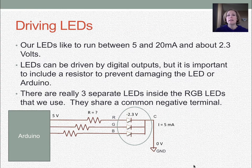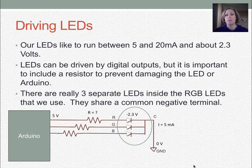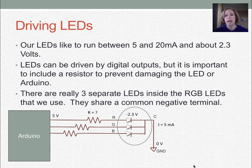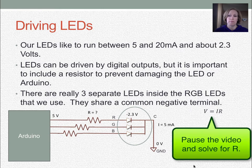To drive our LEDs: LEDs like to run at currents between 5 and 20 milliamps and generally have an approximate voltage drop of 2.3 volts. We can figure out what resistor we need to put into the circuit. We can use the digital outputs to drive LEDs, but we have to include that resistor, otherwise we'll burn out the LED — there would be too much current without it. There are three separate LEDs in our RGB LED, one for red, green, and blue, and they share a common cathode that goes to ground. So we have to put a resistor on each of the red, green, and blue leads and use Ohm's Law to calculate the resistor value needed.